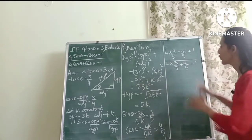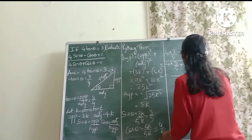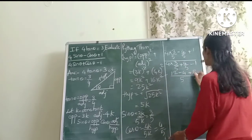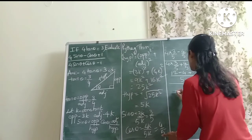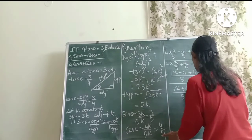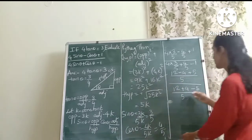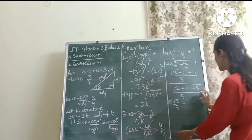Here I'm getting 4 times 3 by 5 plus 4 by 5 minus 1. So my trigonometry part is done till here, friends. This is pure arithmetic. Be very careful while solving. I'm taking the LCM here, so I'll get 12 minus 4 plus 5. Okay, hope you're also doing the same thing. Here also I will get 12 plus 4 minus 5.